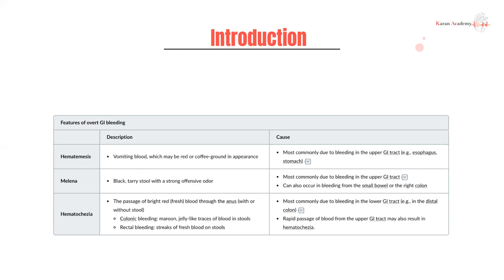With anal fissures, bleeding is typically described as blood on the toilet paper and not blood mixed in stools or hematochezia. So what are some features of GI bleeding? Firstly, you can vomit up blood — when you vomit up blood, you always think upper GI causes. That can be either red or coffee ground. What is the difference between red and coffee ground vomit? If it's red, it means that it's very fresh — it hasn't undergone any change.